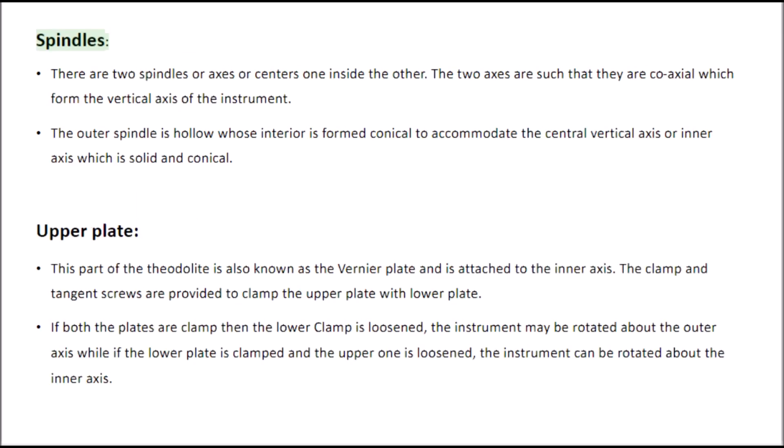Spindles. There are two spindles or axes, or centers, one inside the other. The two axes are coaxial, which form the vertical axis of the instrument. The outer spindle is hollow, whose interior is formed conical to accommodate the central vertical axis or inner axis, which is solid and conical.